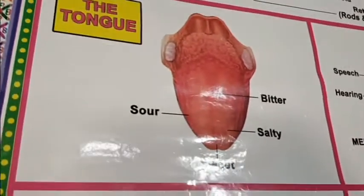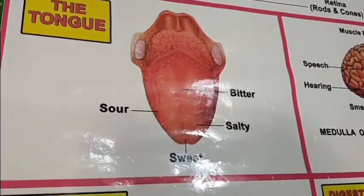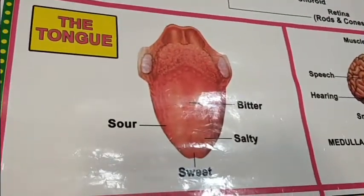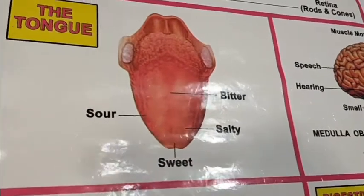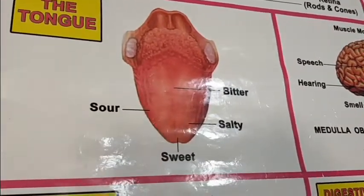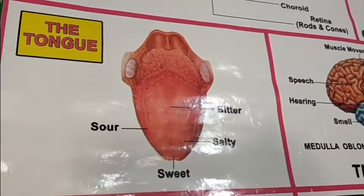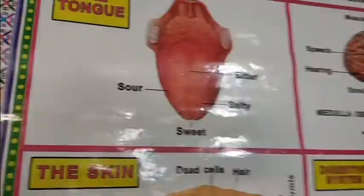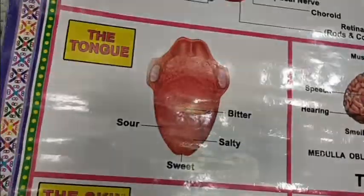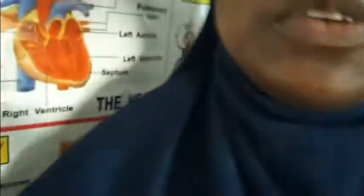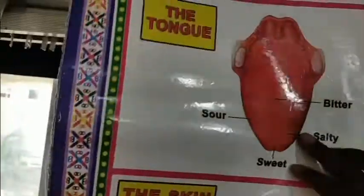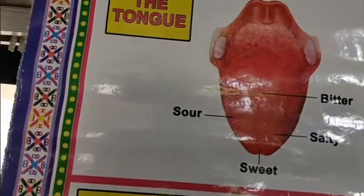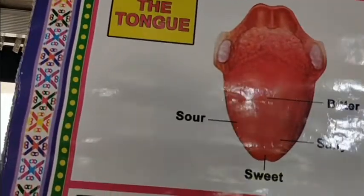The tongue is the organ responsible for our sense of taste, as we all know — whether something is sweet, bitter, and so on. Sensory cells for taste are grouped into taste buds. On our tongue we have tiny dots called taste buds, located in different parts of the tongue.